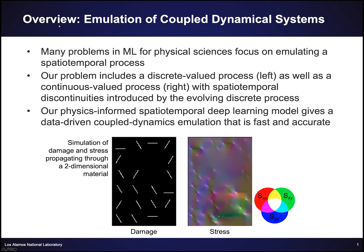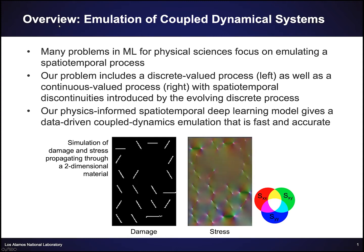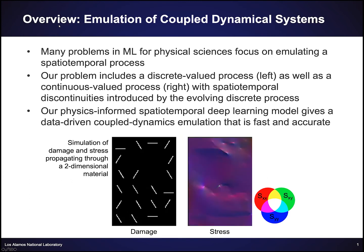Emulating a coupled dynamical system is the goal of this project. There have been plenty of problems — especially using machine learning for physical sciences — that focus on emulating a spatial-temporal process. In most of these cases we have simulations which are computationally expensive or limited in the scale we can simulate, so we're using machine learning to speed up this process, which we call emulation.